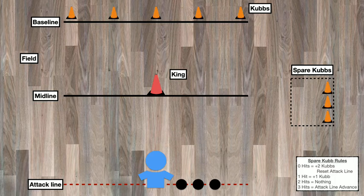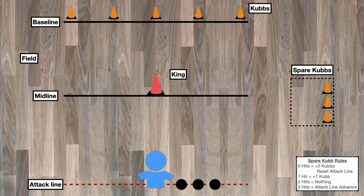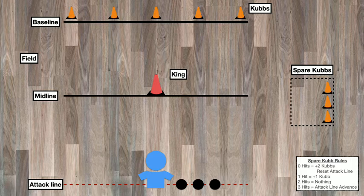For setting up the game, you're going to need a few different things. First, you'll need 9 different items that you can stand up on their own that you can use for your Kubbs and your King. You can use anything from water bottles, plastic cups, or even stuffed animals for these.